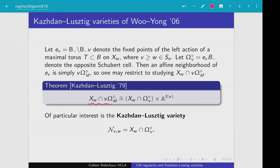For this opposite Schubert cell, we build it by taking opposite Borel orbits instead. Using this fact, we have that these neighborhoods of Schubert varieties are isomorphic to intersections of Schubert varieties with opposite Schubert cells, where we end up with an extra factor of affine space. So what Wu and Yang did is say, let's just study this intersection and call it the Kazhdan-Lusztig variety.